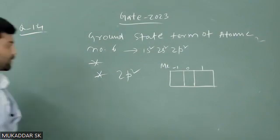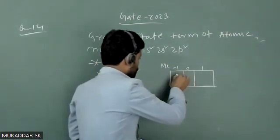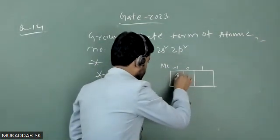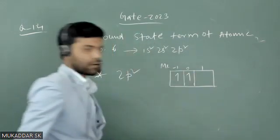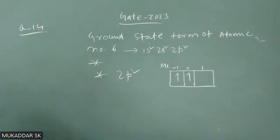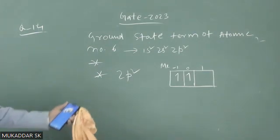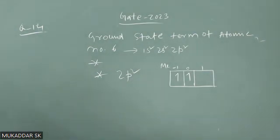To maximize that L we have two electrons - to maximize that S value, the two electrons will be parallel and they will be sitting like this.